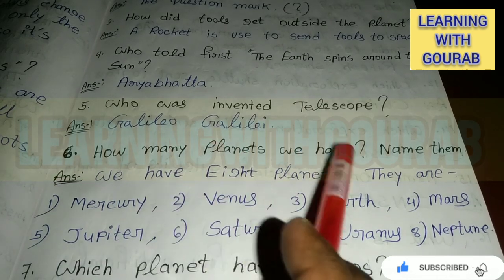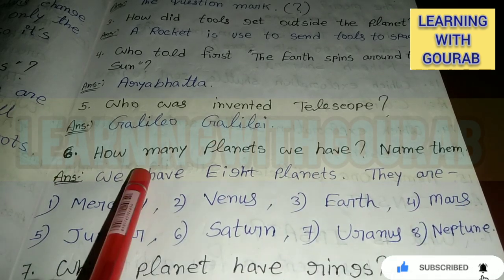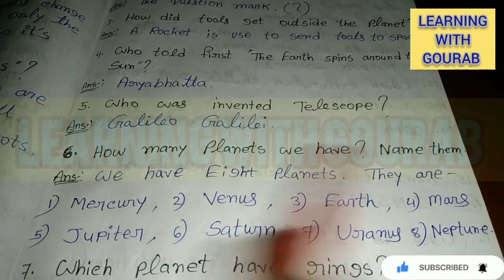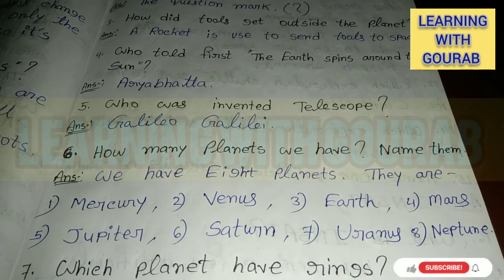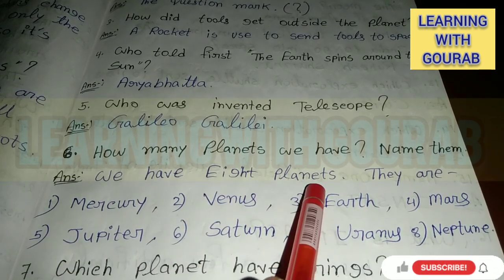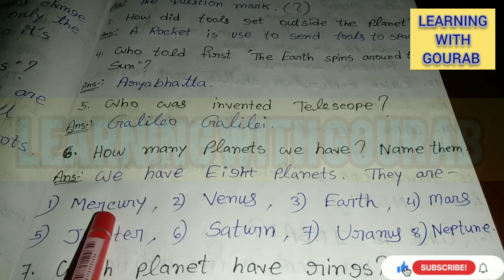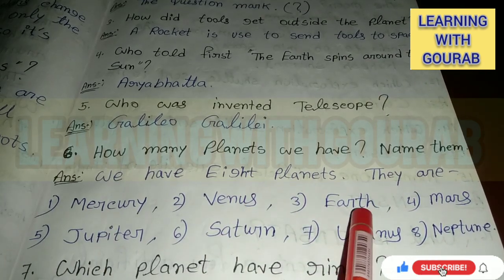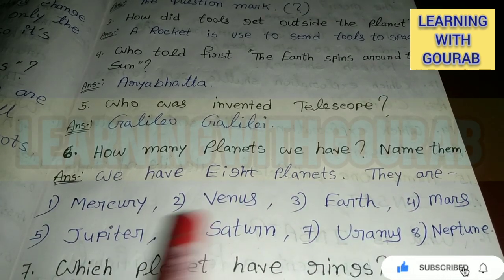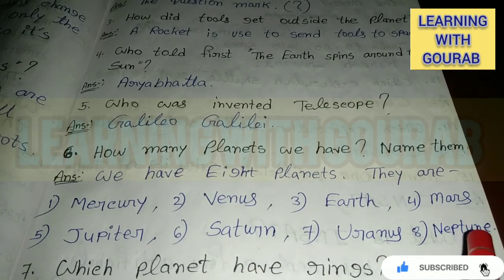How many planets are there? Name them. Answer: We have eight planets. They are Mercury, Venus, Earth, Mars, Jupiter, Saturn, Uranus, and Neptune.